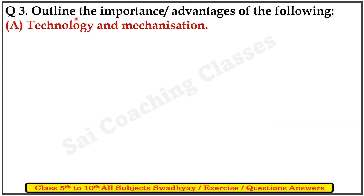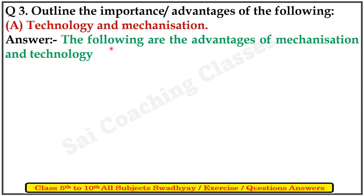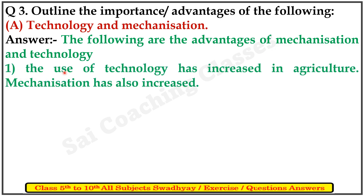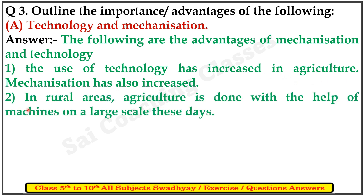Question three: outline the important advantages of the following. A: Technology and mechanization. The following are the advantages of mechanization and technology. First, the use of technology has increased in agriculture and mechanization has also increased. Second, in rural areas agriculture is done with the help of machines on a large scale.